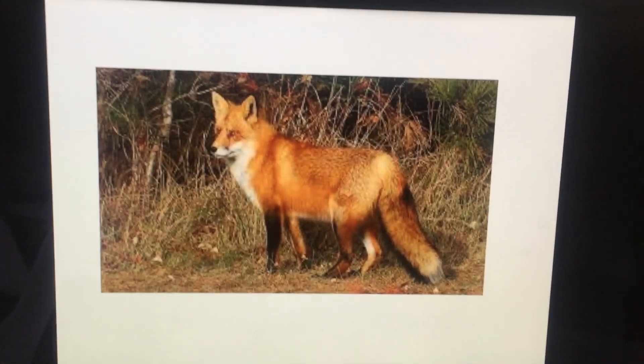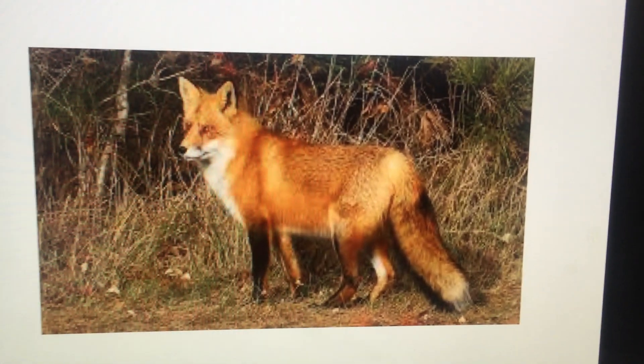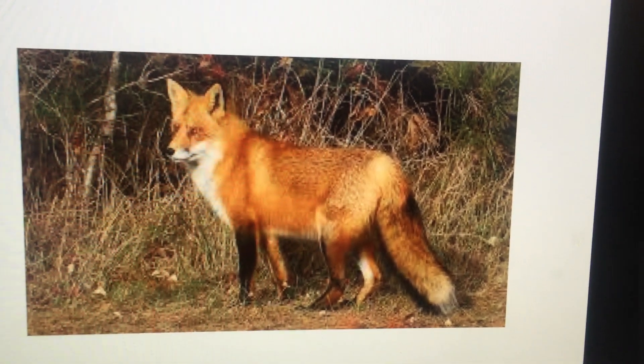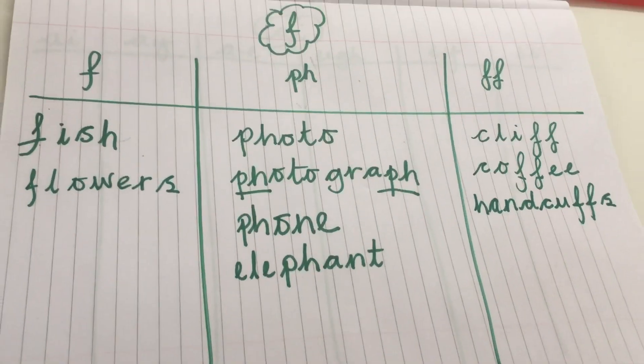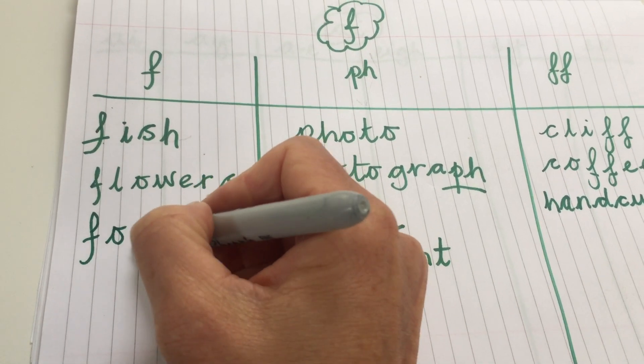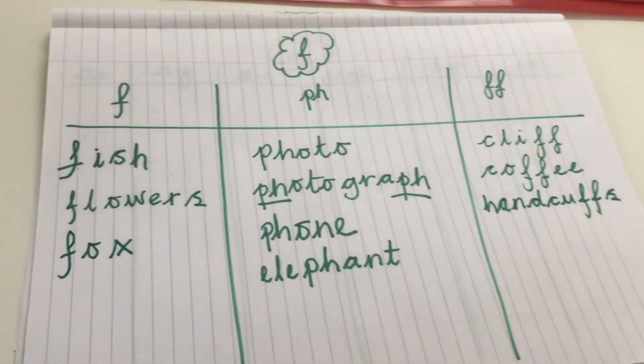Let's have a look. Oh, a fox: F-O-X. Fox. And that F sound is at the beginning of the word, and that's just got a single F. So let's write the word fox. It's got a single F sound: F-O-X. Fox. Well done.